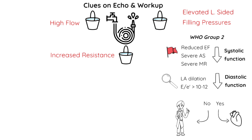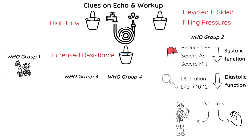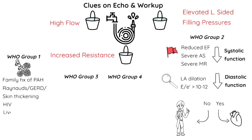For things that increase resistance, we're looking at WHO groups 1, 3, and 4. Within WHO group 1, check for pulmonary arterial hypertension. Screen by asking about family history of hereditary PAH or connective tissue diseases, symptoms suggesting Raynaud's, refractory GERD, or skin thickening that may indicate scleroderma. You'd also want to test for HIV and underlying liver disease, and ask about drug or toxin exposures, especially methamphetamine use or tyrosine kinase inhibitors.